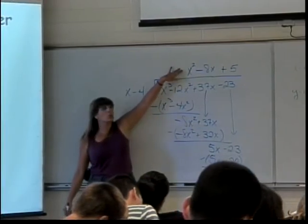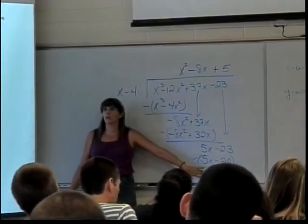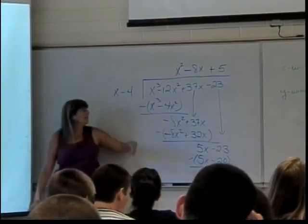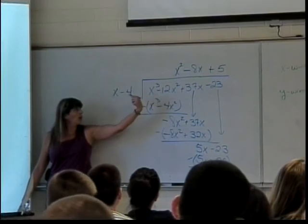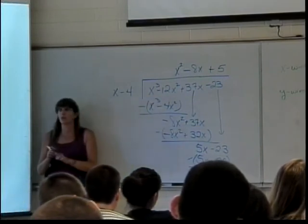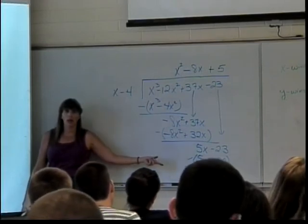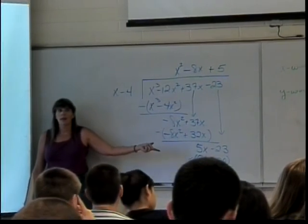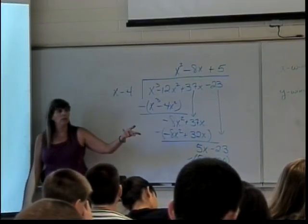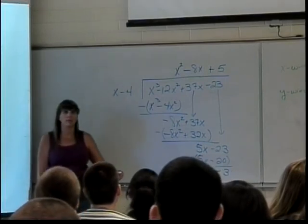This is my quotient. X squared minus 8X plus 5. My remainder is negative 3. Is X minus 4 a factor of X cubed minus 12X squared plus 37X minus 23? No, because I got a remainder. It did not go in there evenly. Now, how many of you are looking at this going, oh my gosh, are you crazy? Do I really have to do this?